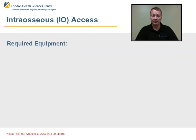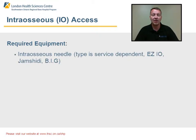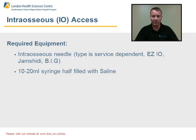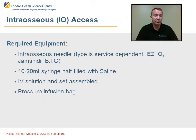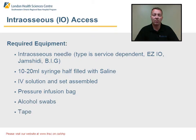So what is our required equipment? In our region, different services carry different intraosseous kits or tools. There is the Jamshidi needle, some carry the Cook needle, as well as the bone injection gun, and other services carry the Easy IO drills. We're also going to need a preloaded syringe with about 10 to 20 mLs of normal saline, our IV solution, drip sets, a pressure infusion bag — some services may use a blood pressure cuff — alcohol swabs, tape, and 4x4 dressings.